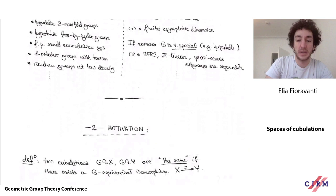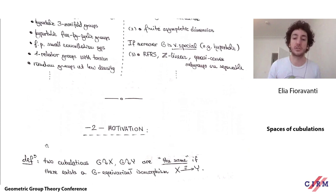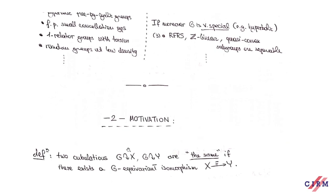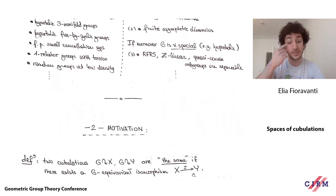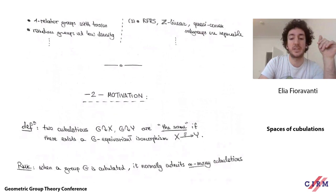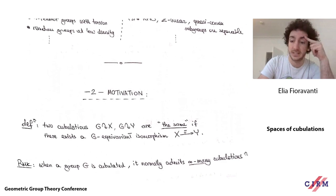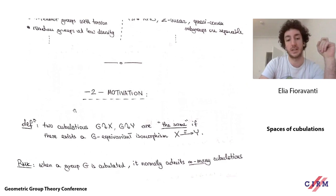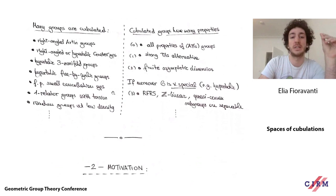Before I say more, I should be more precise: I want to study all possible cubulations, so I should say when two cubulations are going to be the same. Cubulations are actions on cube complexes, and we say two actions are the same if there exists an isomorphism between the two CAT(0) cube complexes that conjugates one action into the other — an equivariant isomorphism. The basic observation that gets this whole idea started is that when a group admits a cubulation, it tends to admit infinitely many pairwise distinct ones.